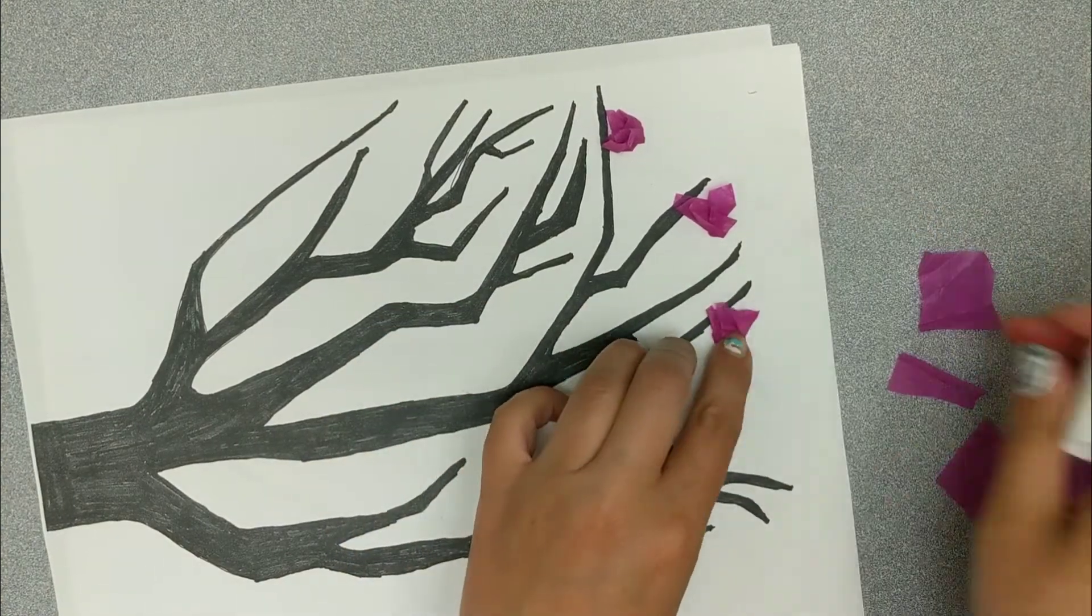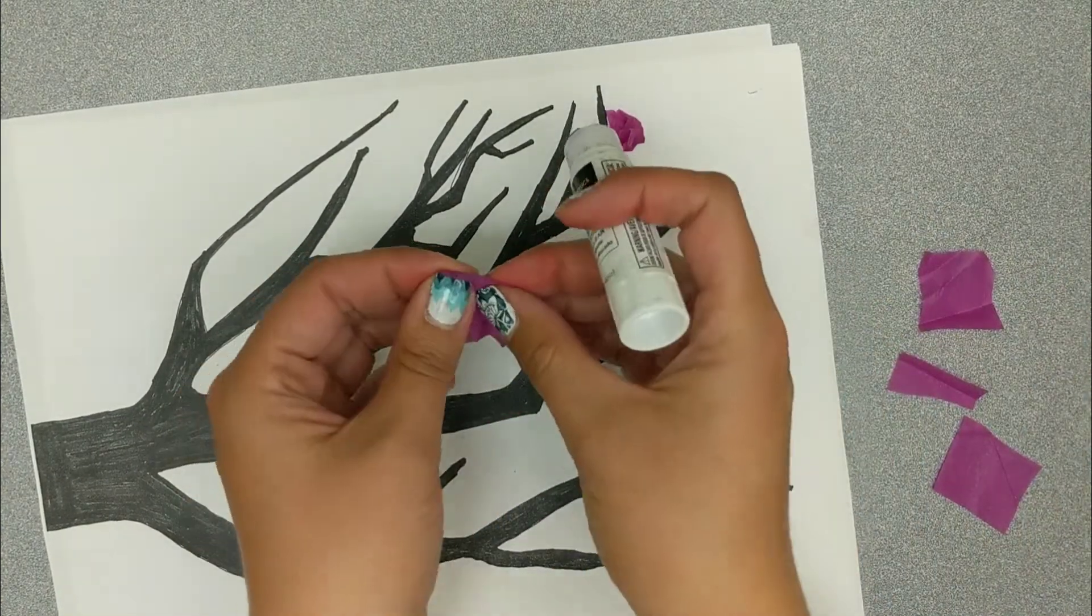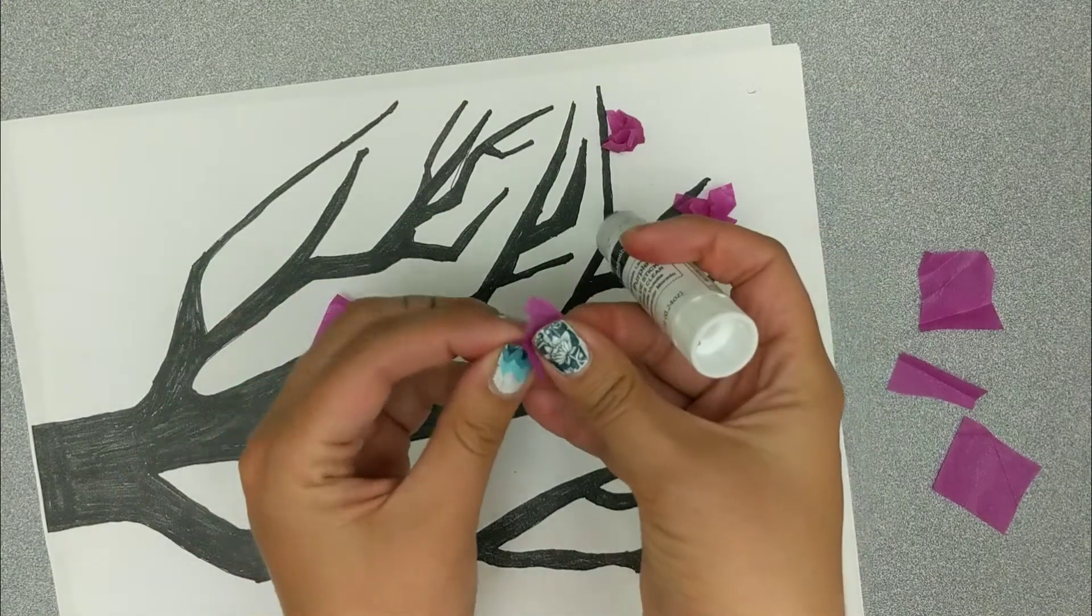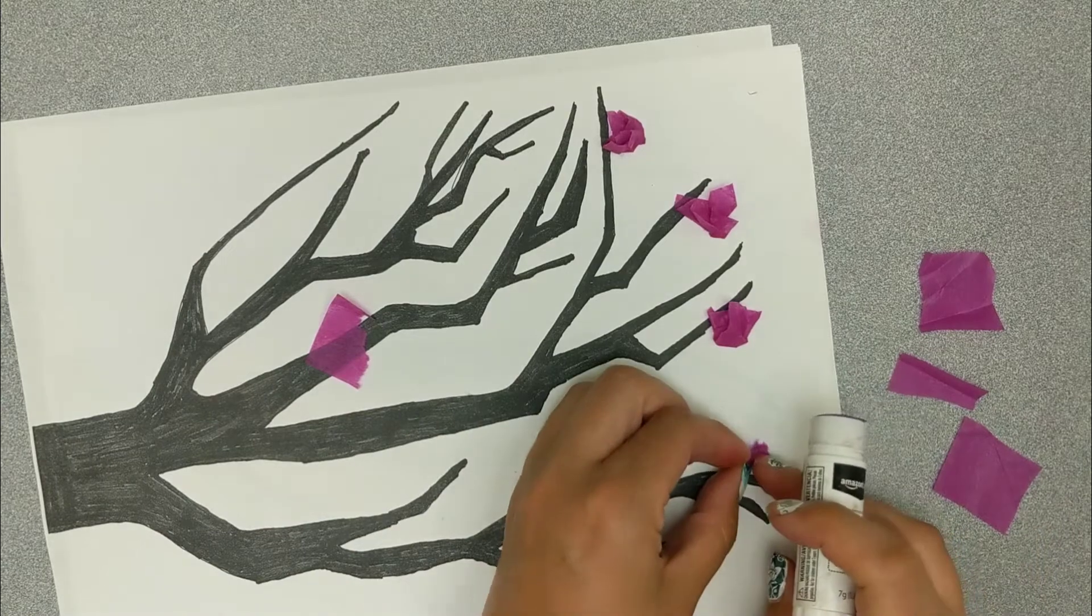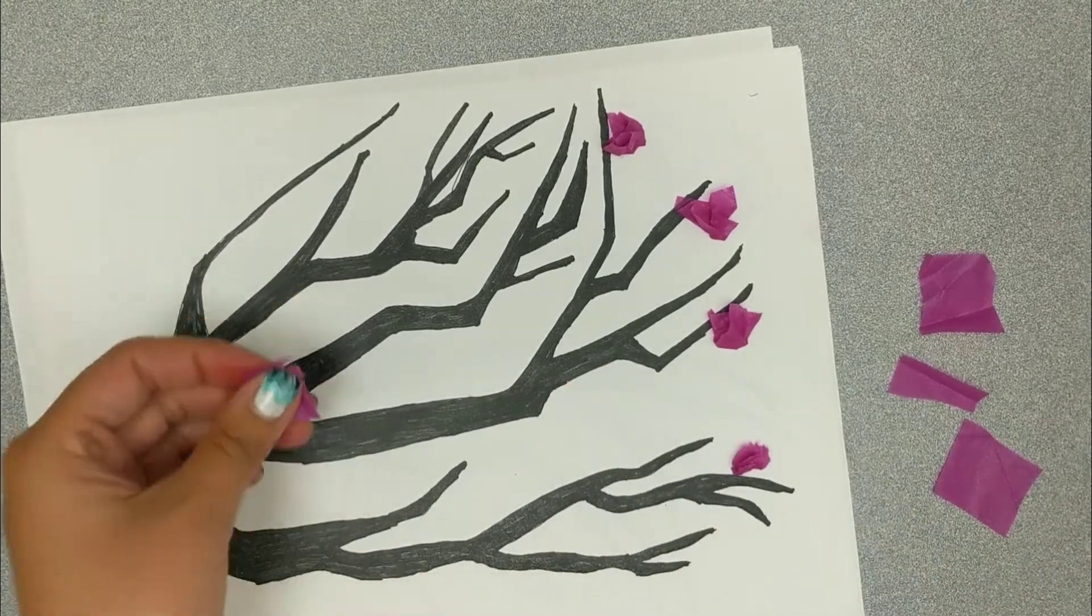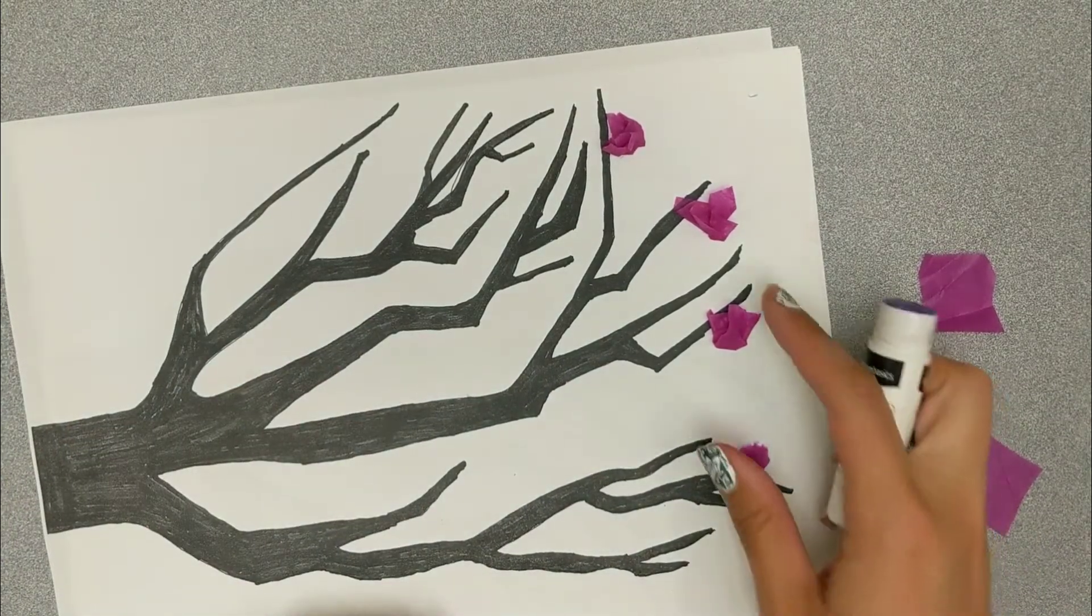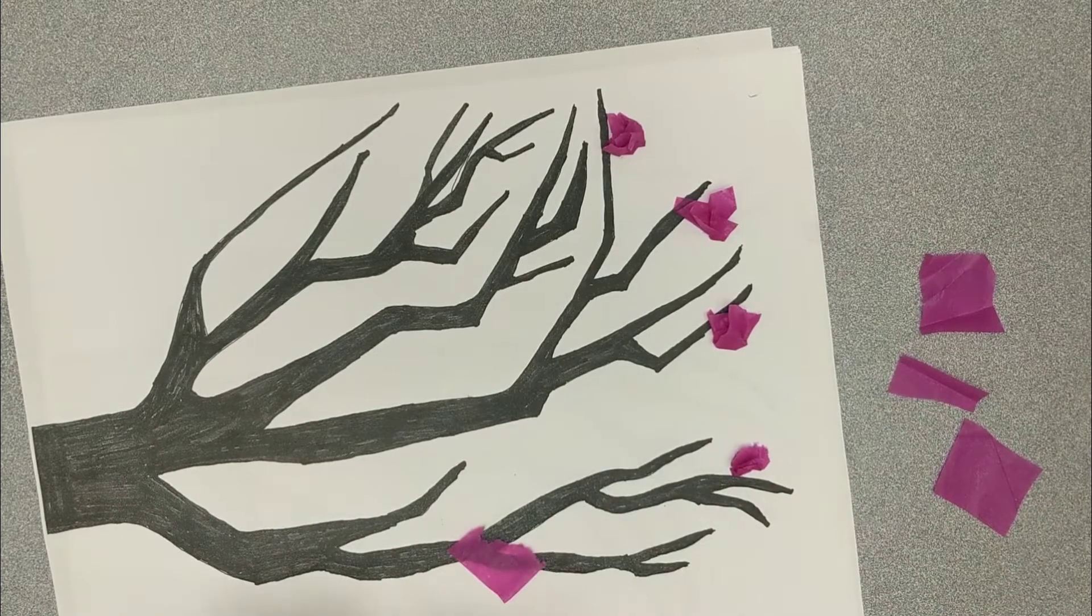You can also, if you want, tear the tissue paper and get some different textures in there. So again, I'm not smooshing it totally flat. I'm letting it stand up from the paper.